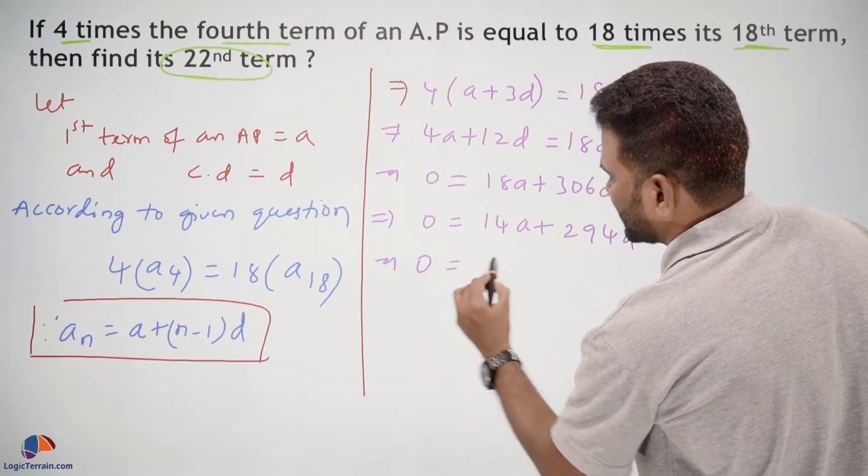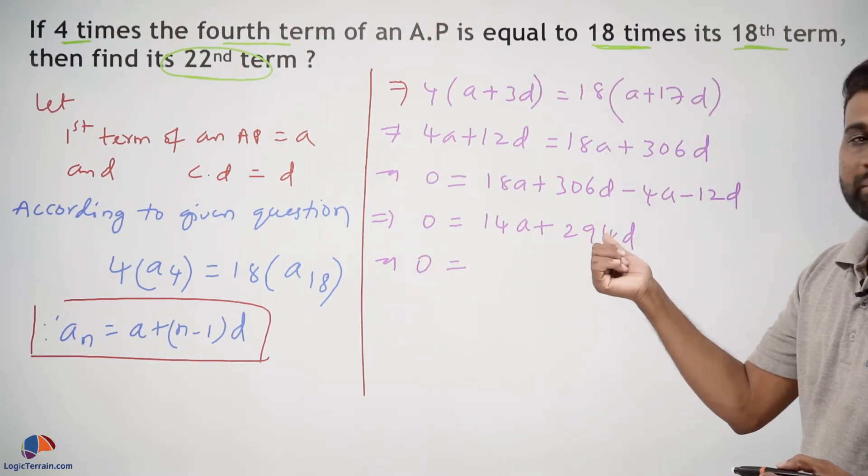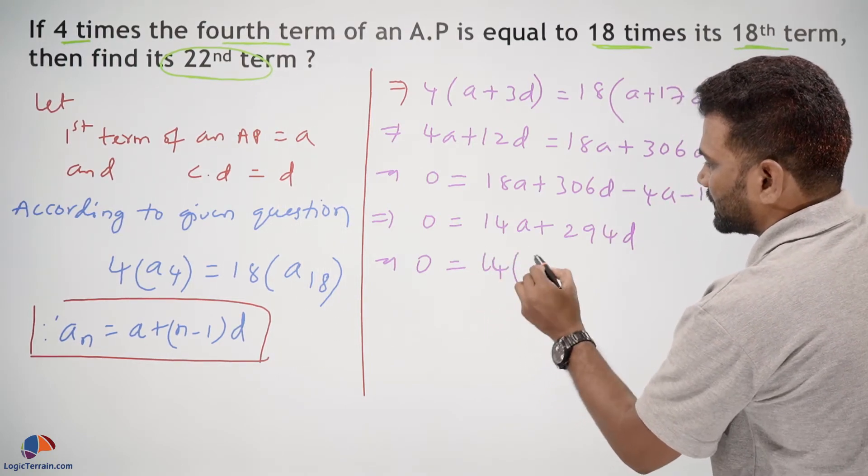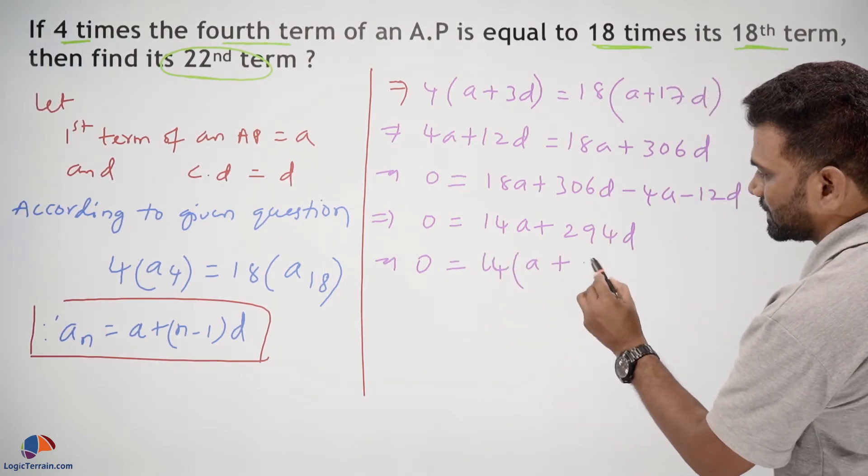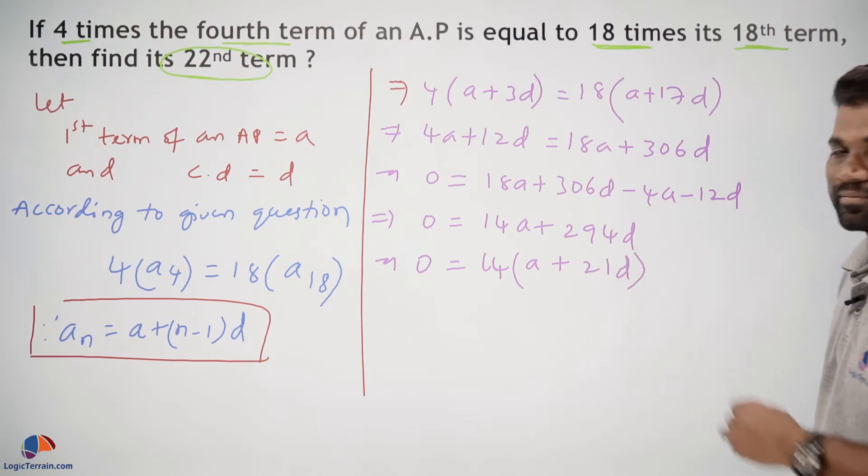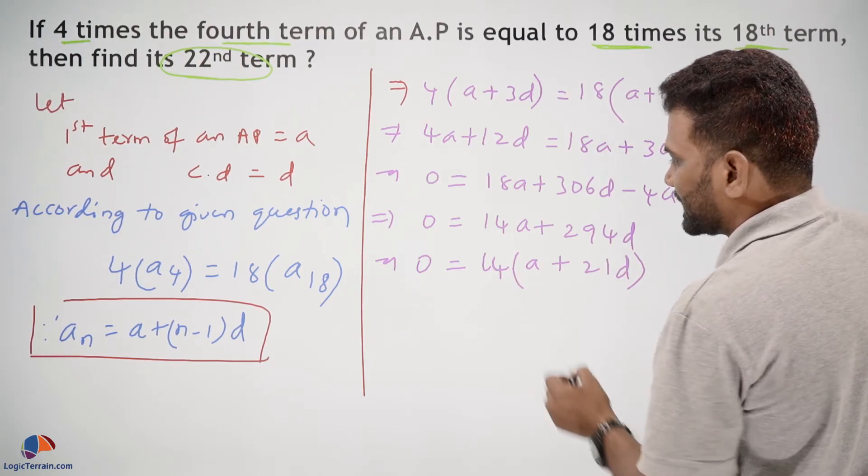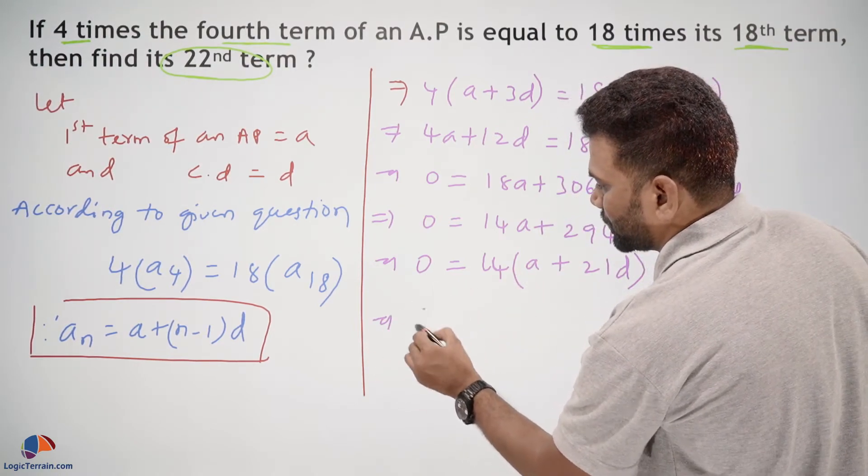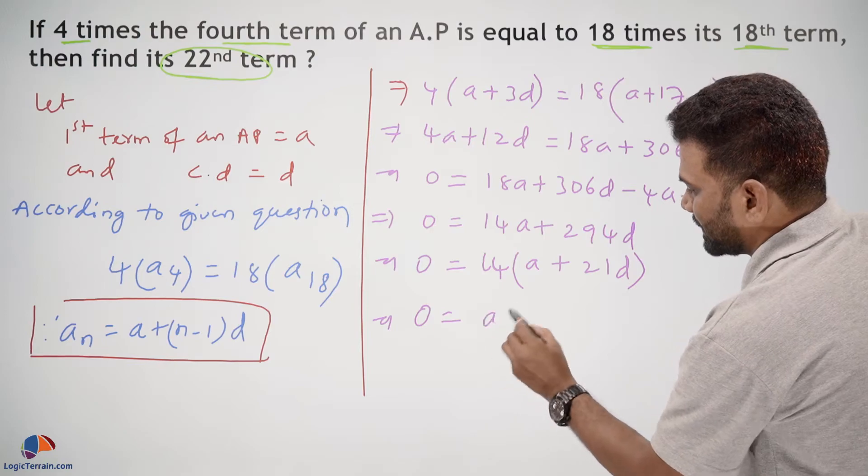Further, 0 equals 14A plus 294D. If we divide by 14, we get 0 equals A plus 21D, since 294 divided by 14 is 21.